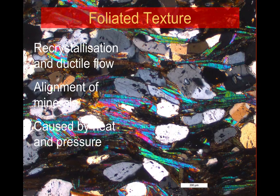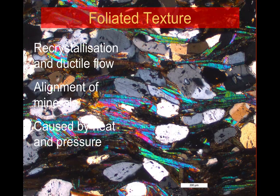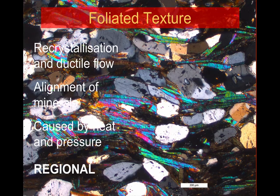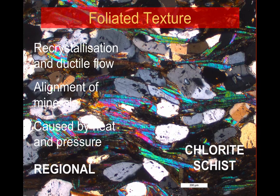In this rock, the monochromatic minerals are quartz and the brighter colored, elongated minerals are chlorite. It's formed by regional metamorphism because of that combination of heat and, crucially, pressure. This rock is actually a chlorite schist — so a relatively low-grade schist.